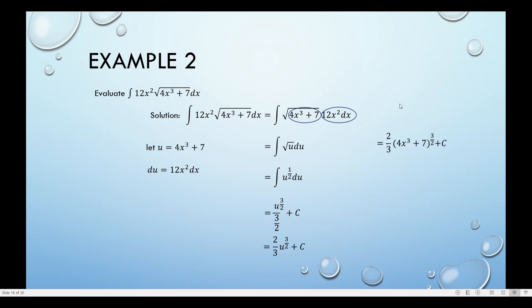Then I can replace the original value of u. This u should be 4x cubed plus 7. So I have 2 thirds times the quantity 4x cubed plus 7 raised to the power of 3 halves, plus c. I can simplify this further into 2 thirds times the square root of the quantity 4x cubed plus 7, cubed, plus c.